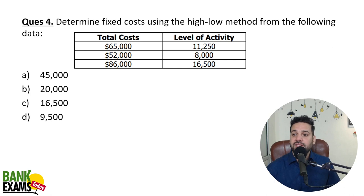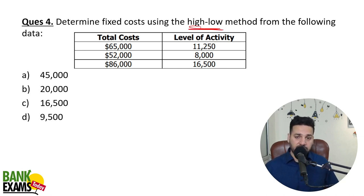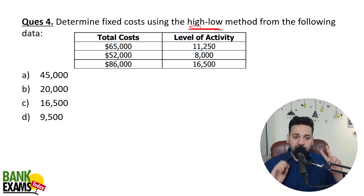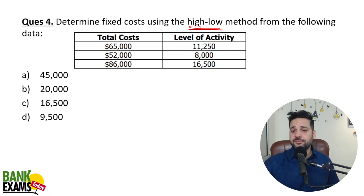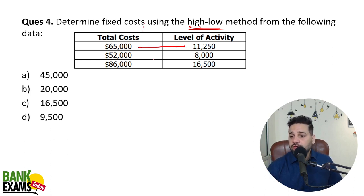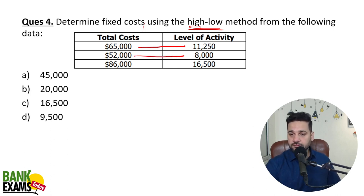Now the fourth question — High-Low method, which I have already taught you in class. It's a very easy question. We are going to do two questions from the high-low method. Total cost of 65,000 for activity level 11,250; 52,000 for activity level 8,000; and 86,000 for activity level 16,500.